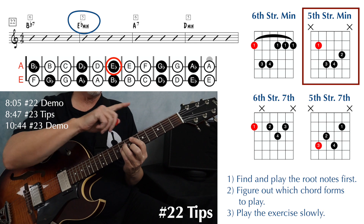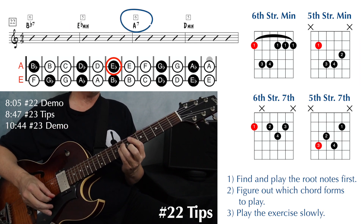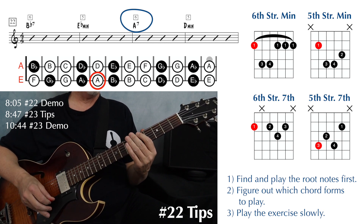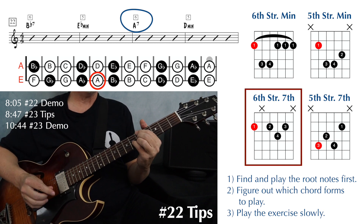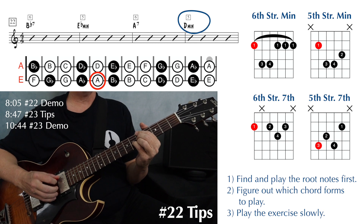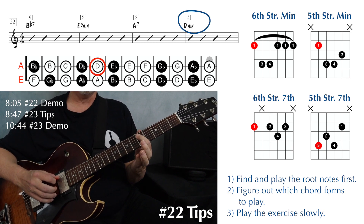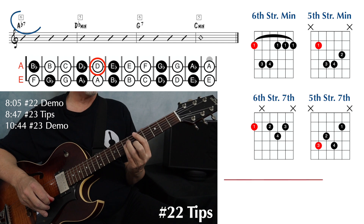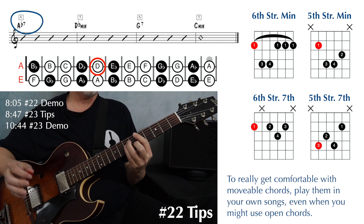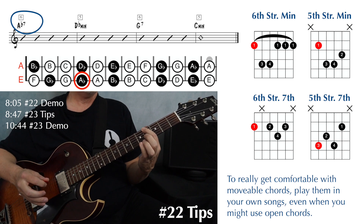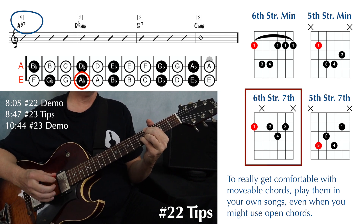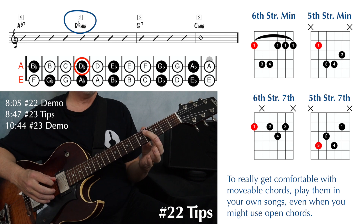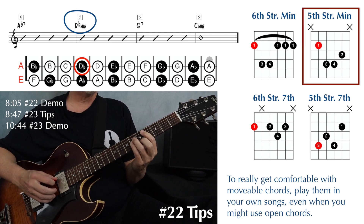And then we're going to be working our way down the fretboard for this one. Next we have an A seven on string six — find your A note on string six, that'll be at the fifth fret, and that will be with the sixth string dominant seven shape. Moving to a D minor on string five — our D note on string five is at the fifth fret, this will be the fifth string minor shape. Moving to an A flat seven on string six — that'll be at the fourth fret, with the sixth string dominant seven shape. Then to D flat minor on string five — your D flat on string five will also be at the fourth fret, playing our fifth string minor shape.